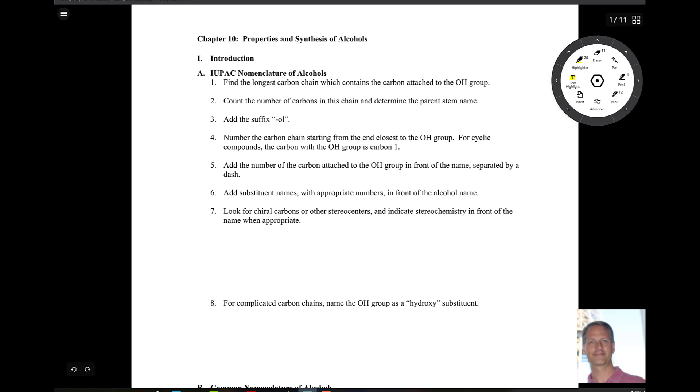And then we assign numbers, so we give the alcohol the highest priority. If it's cyclic, you know, give it number one. We want to add substituent names and look for stereocenters. So let's do some examples.